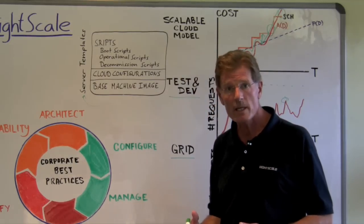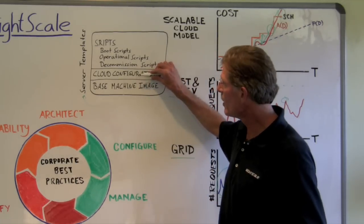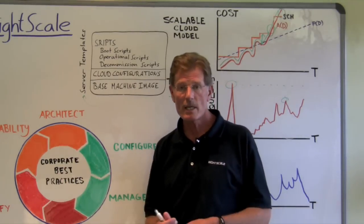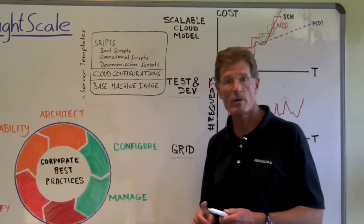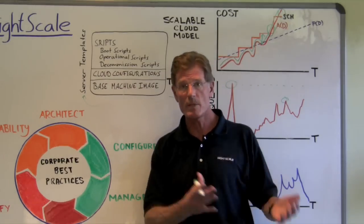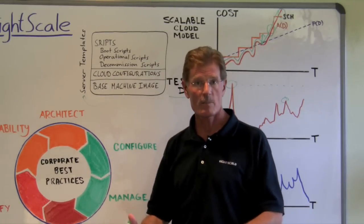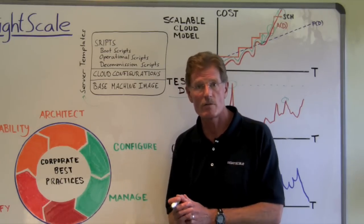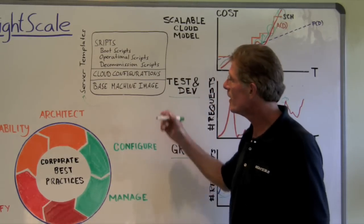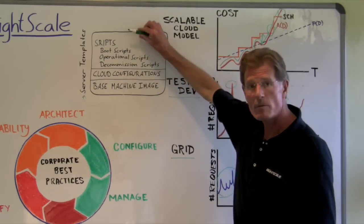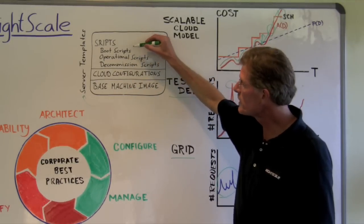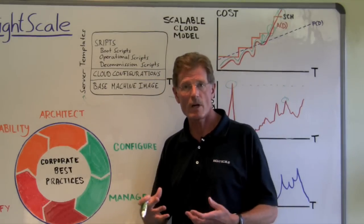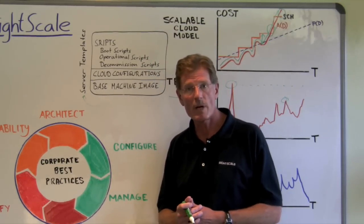So we call this dynamic configuration. And all the components from that base image up load from the RightScale main system to help that server perform whatever its function is. It might be a web server, it might be an application server, it might be a batch slave processing server, or a database. All of that gets defined at run time through scripts that are loaded and can contain variables that get downloaded from the RightScale system.